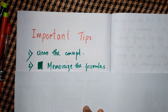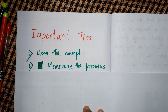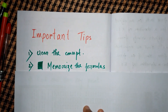The second tip is: memorize the formulas. Before going with the numericals, the second most important thing is memorizing the formulas. If you don't know how to derive the formulas, you will surely face some difficulties in doing the numericals. But if you know how to derive them, you will be aware of each and every part of the formula, which will be helpful during understanding the question and finding the solution.